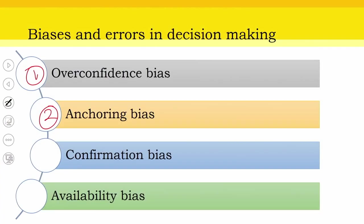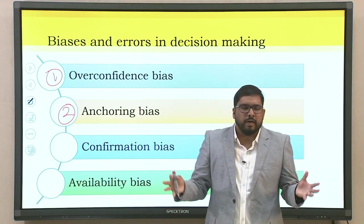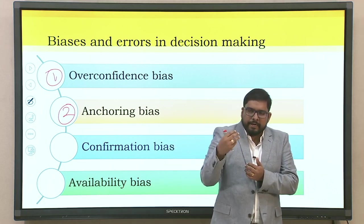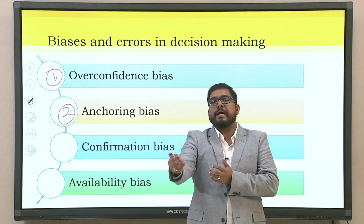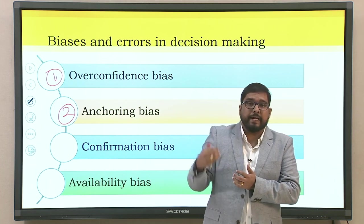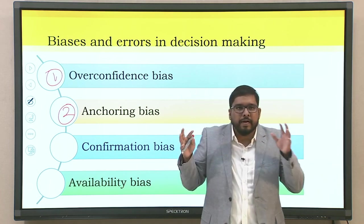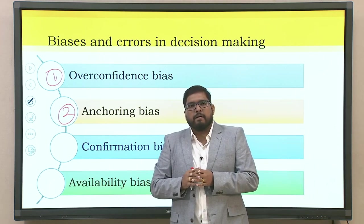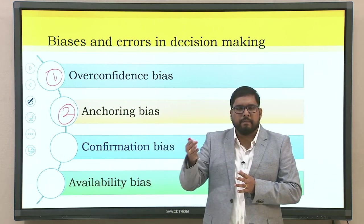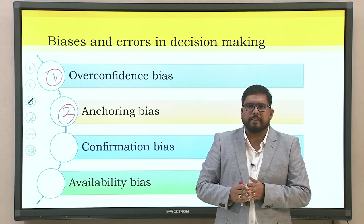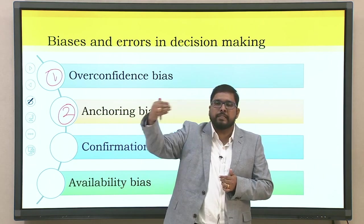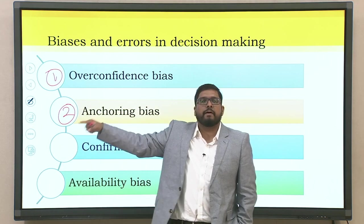The second is anchoring bias — mainly related to primary information available, similar to the primacy effect. When given certain information about a context, you become anchored to it. Additional information that can give a different opinion comes in, but you are not ready to accept it. For example, during COVID-19, most deaths — even from suicides, mental depression, or road accidents — were associated or related to COVID. That is anchoring bias: with the initial information available, we tend to relate all events to it.